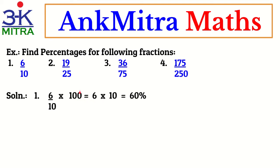6 multiplied by 10 — one zero reduced from 100 also brings it down to 10. So 6 multiplied by 10 gives the answer: 60%. So if there are 10 students in a class and 6 of them attended a particular session, you can say that their attendance was 60%.